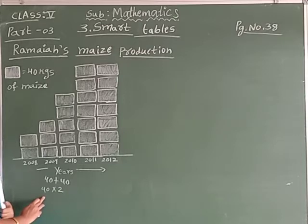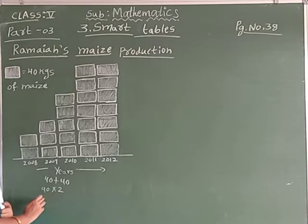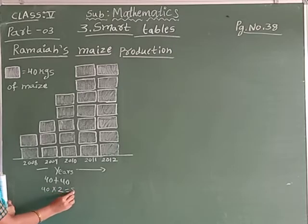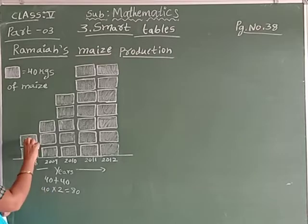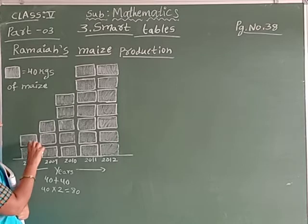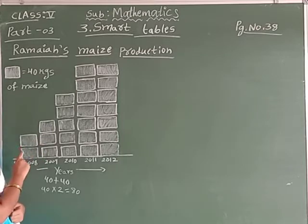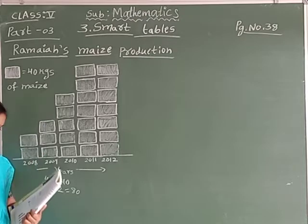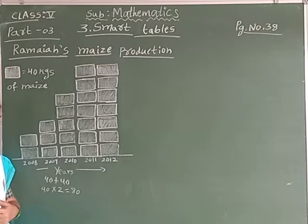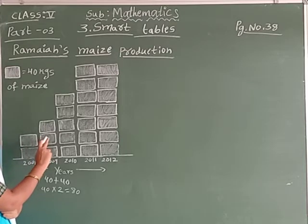You know — first of all, you multiply. First, 4 times 2, afterwards you keep 0. So 4 twos are 8, keep 0 — that's 80. See here, in two boxes, how many kg of maize? In 2008, Ramayana grows in his field 80 kg of maize.